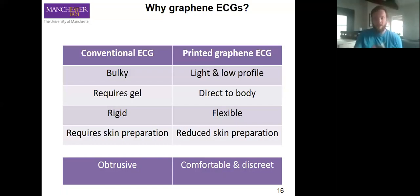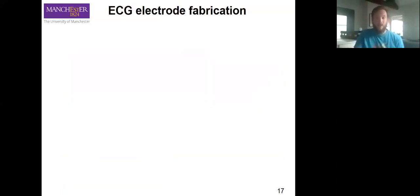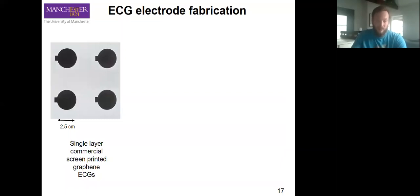Our ECG electrodes: we have several different forms. We have single layer commercial screen printed graphene. These are all using the same substrate, which is a paper specifically designed for printing electronic applications. Screen printed, we're able to produce quite large areas, quite a large number of electrodes fairly quickly.